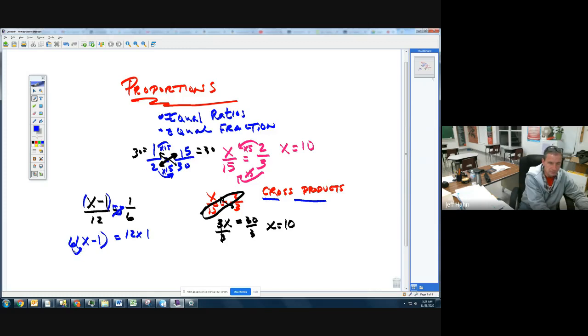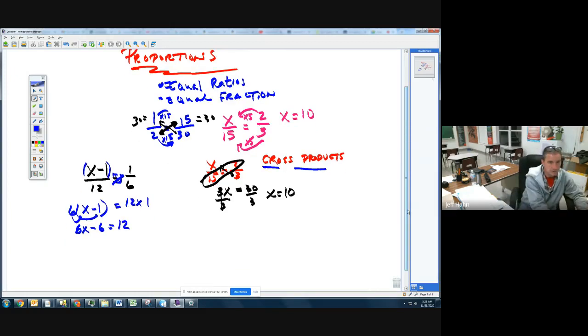6 times x is 6x. 6 times a negative 1 is negative 6. And that equals 12 times 1, which is 12. Now, solving this whole thing, which you guys are almost experts at solving these complex equations now, simply means I get rid of this subtracting 6 by add 6. Add 6 over here. If 6x equals 18, I divide by 6, I divide by 6, and x equals 3. That's what I get when I solve that one.